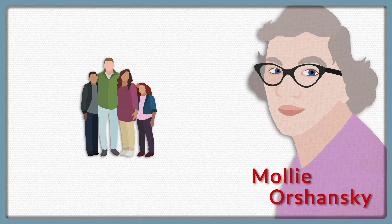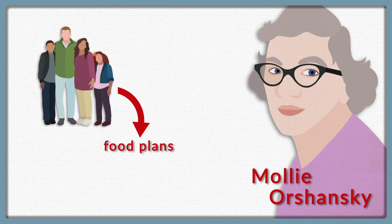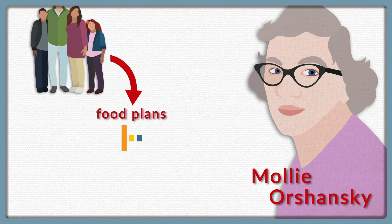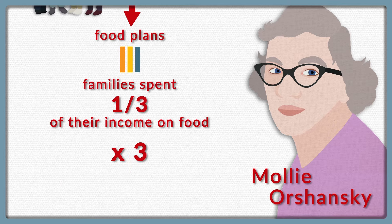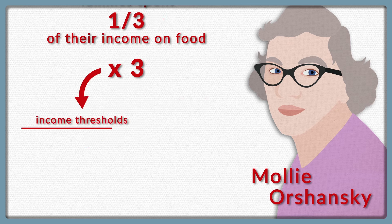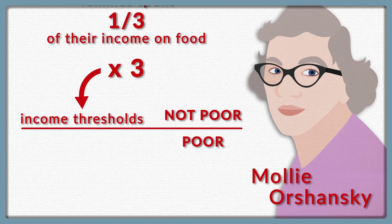At the time, the U.S. Department of Agriculture had detailed sets of food plans broken down by household size. And surveys had found that families spent about a third of their income on food. And so by multiplying the cost of a no-frills food plan by three, Orshansky was able to develop income thresholds for families of all different sizes. Families with income below the threshold were considered to be poor, and families with income above the threshold were considered to be not poor. And that's how the government has been doing it ever since.